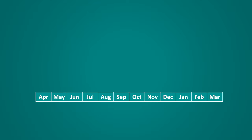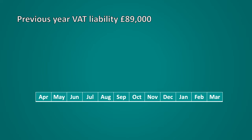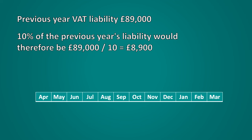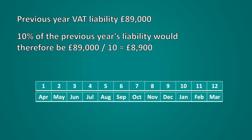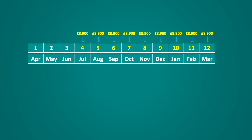Let's now have a look at a further example where the business would be eligible for a refund. A business's financial year runs from April through to March and the previous year's VAT liability was £89,000. The monthly amounts would be calculated as £89,000 divided by 10, giving you £8,900. As payments need to be from months 4 through to 12, and the financial year runs from April to March, the fourth month would be July, making the first payment, followed by 8 further payments through to March.